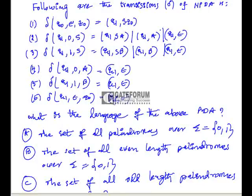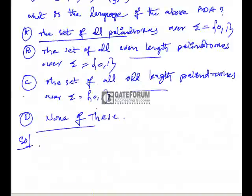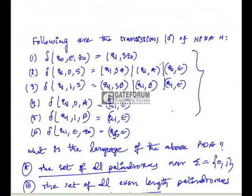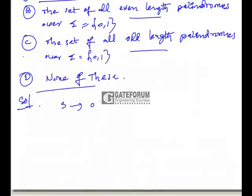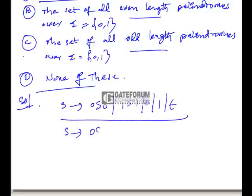The options are: A) all palindromes, B) even palindromes, C) odd length palindromes, D) none of the above. Normally this is a pushdown automata converted from the grammar: S → 0S0 | 1S1 | 0 | 1 | epsilon, which represents palindromes. When you remove epsilon you get S → 0S0 | 1S1 | 0 | 1.